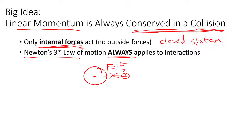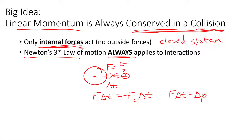F1 and F2 are going to be equal and opposite, so F1 equals negative F2. They're also both interacting at the same time — whenever one is pushing, the other is pushing — so the time intervals they are applied are the same for both. Multiplying both sides by time, we get F1 times t equals negative F2 times t. By the impulse-momentum theorem, force times time is a change in momentum, so we can substitute in our change in momentum on both sides. The left side is going to be the change in momentum for the first object.